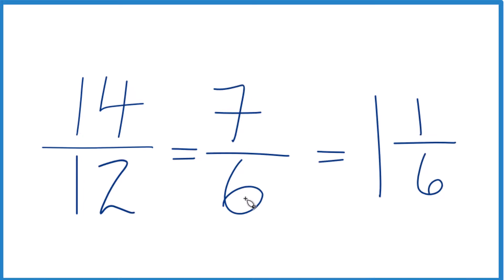So 7/6 is equal to the mixed number 1 and 1/6. We can check that: 1 times 6, that's 6. 6 plus 1, that gives us 7. We just move the 6 across here for the denominator.